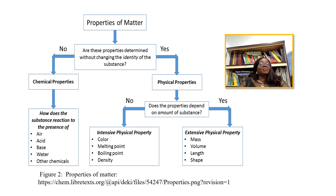We'll go over to the chemical properties and ask: how does the substance react in the presence of air? Those are what affect chemical properties. The presence of air will affect it — like the rusting of iron. If you continue to keep iron outside, it will rust and become very brittle; it has changed properties. If we react it with an acid, it will change and cannot come back. If we react it with water, the same thing. Those are what affect the chemical properties.